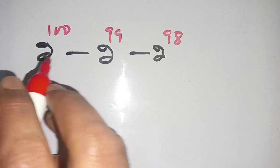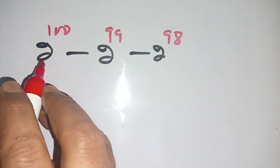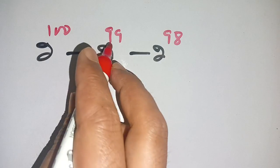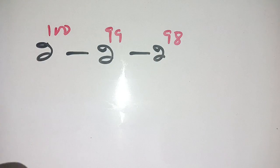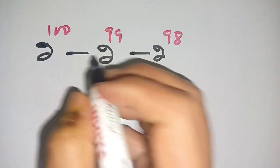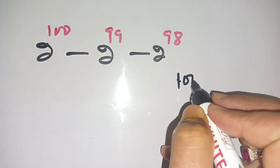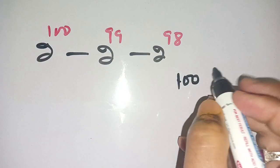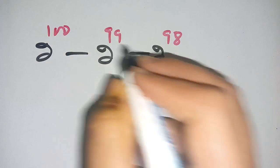In today's video, we are going to solve this power problem: 2^100 - 2^99 - 2^98. Let us solve this. Before solving, we consider that 100 is greater than 99, and 99 is also greater than 98.